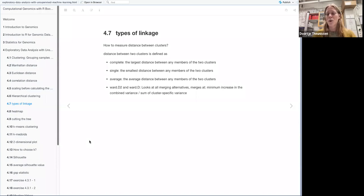And the four types of linkage that are mentioned in the book is complete, single, average, and then the Ward. And for the complete linkage, you use the largest distance between any members of two clusters to see what the distance of the cluster is. For the single one, you use the smallest distance. For the average, the average distance. And then with the Ward, it works a little bit differently. They look at all different merging alternatives and then they decide which ones to merge based on the minimum increase on the combined variance of those specific clusters.